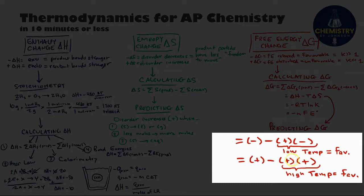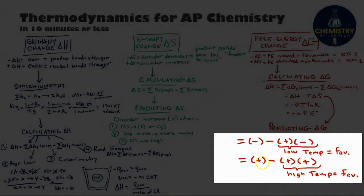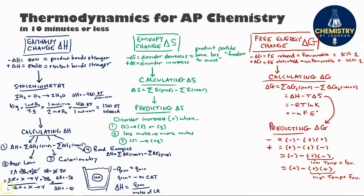If delta H and delta S are both positive, the opposite is true. We're going to want high temperatures so that T delta S term overcomes the delta H term, and we get a negative delta G value.